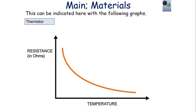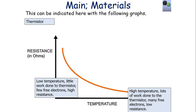Looking at experimental data: when we plot the resistance of a thermistor against its temperature, the graph is not linear — it's not a straight line and not a directly proportional relationship; it is more curved. At low temperature, little work is done to the thermistor, so there are fewer free electrons and a higher resistance. At high temperature, lots of work is done to the thermistor, many free electrons are in the circuit, and the resistance is much lower.